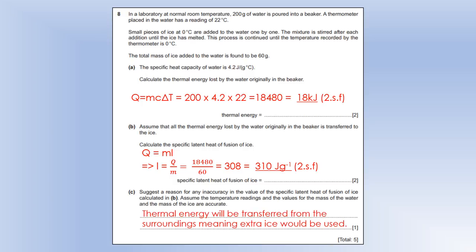So just a reason for any inaccuracy in the value. Well, we're going to be exchanging thermal energy with the surroundings. And more specifically, thermal energy would come in from the surroundings because it's below room temperature. And that's going to mean actually we're going to have used slightly too much ice in our calculations. We'd have had to put in more ice than actually normal.